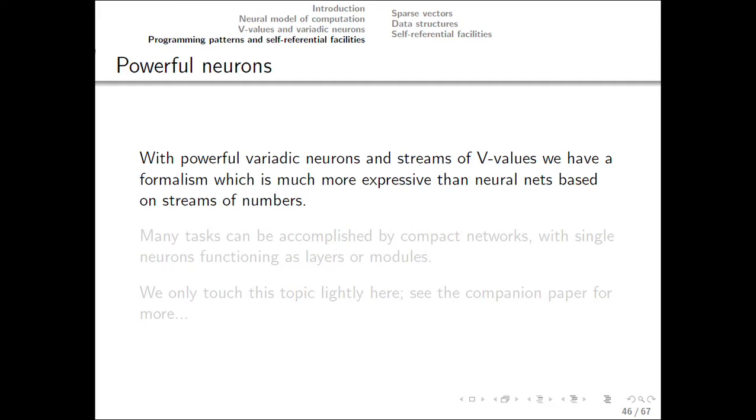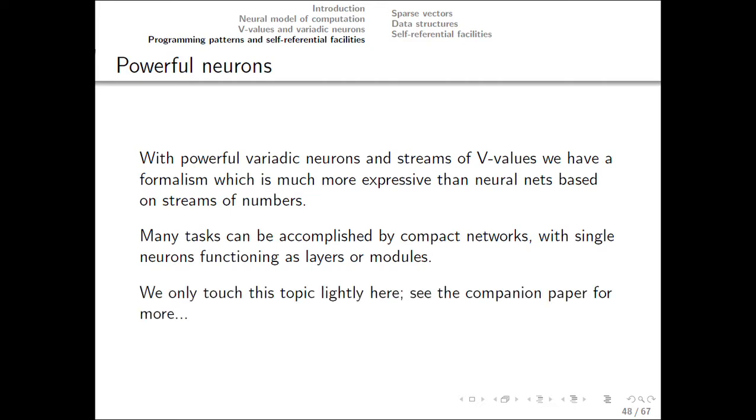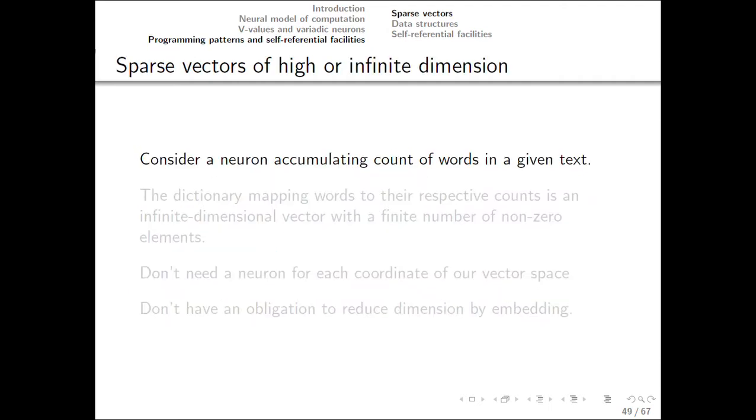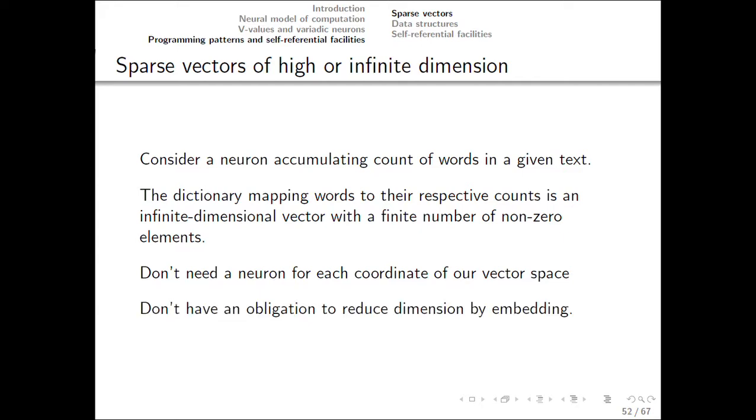Now the question is what you can do with this formalism. With powerful enough variadic neurons and streams of V-values, you can, for example, use single neurons as layers or modules, and so you can have very compact networks accomplishing a variety of tasks. I'm only going to talk lightly about all this because we don't have too much time. For example, V-values can include sparse vectors of high or infinite dimension, and so a single neuron can process vectors of high dimension or even infinite. Say a neuron wants to accumulate count of words in a given text. The dictionary mapping words to their respective counts is an infinite dimensional vector with a finite number of non-zero elements. So we don't need a neuron for each coordinate of our vector space, which is convenient.